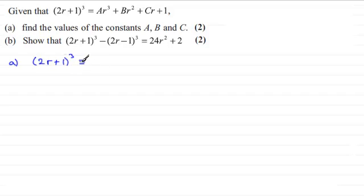We use the binomial expansion to do this. The coefficients, if we use Pascal's triangle for instance, are going to be 1, 3, 3, 1. So we're going to have 1(2r)³(1)⁰.